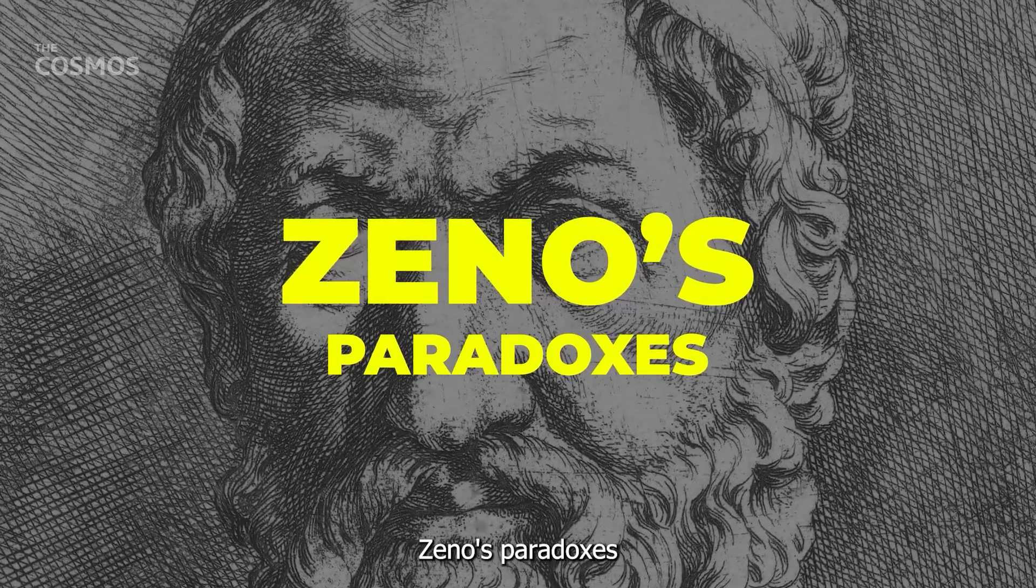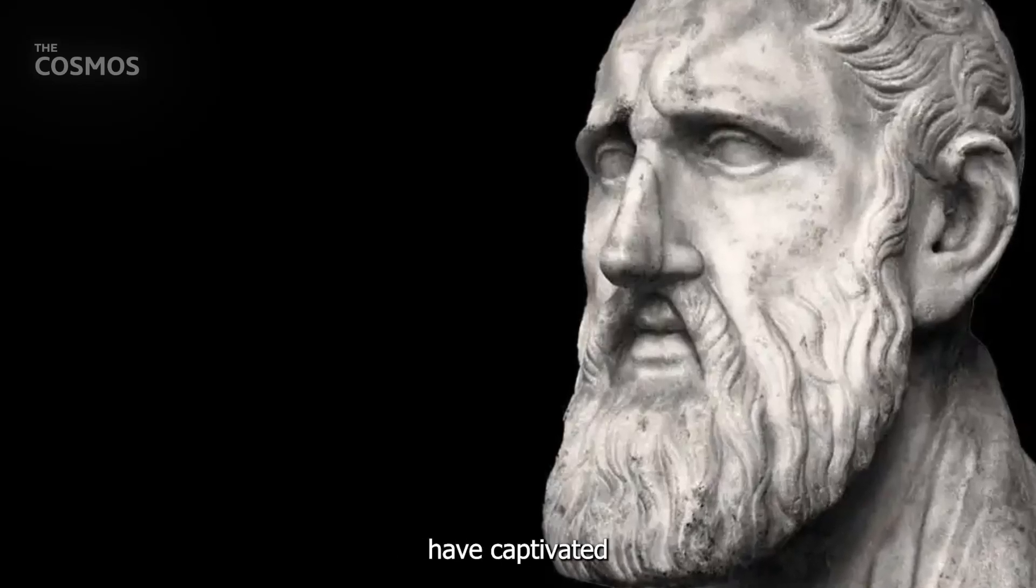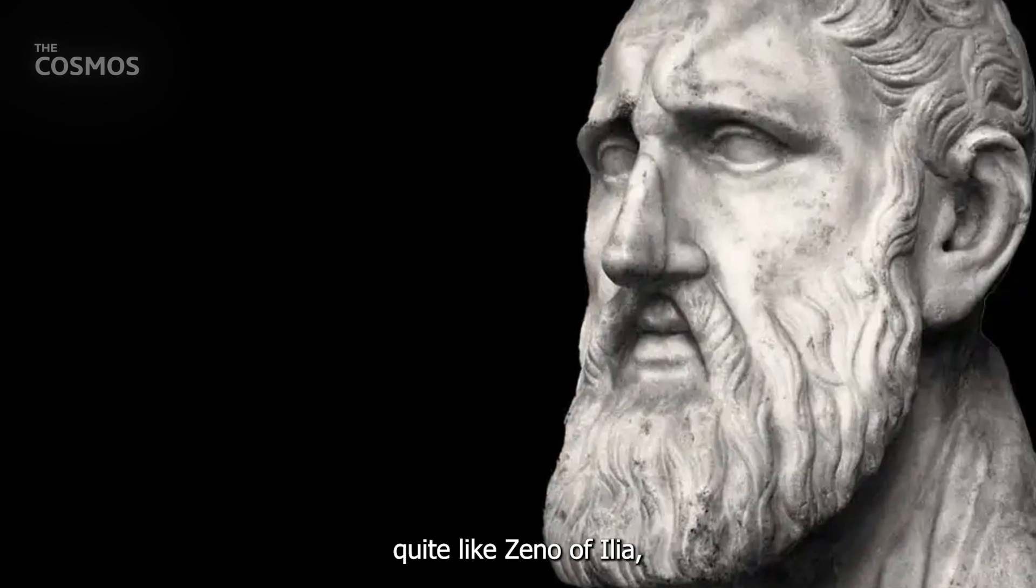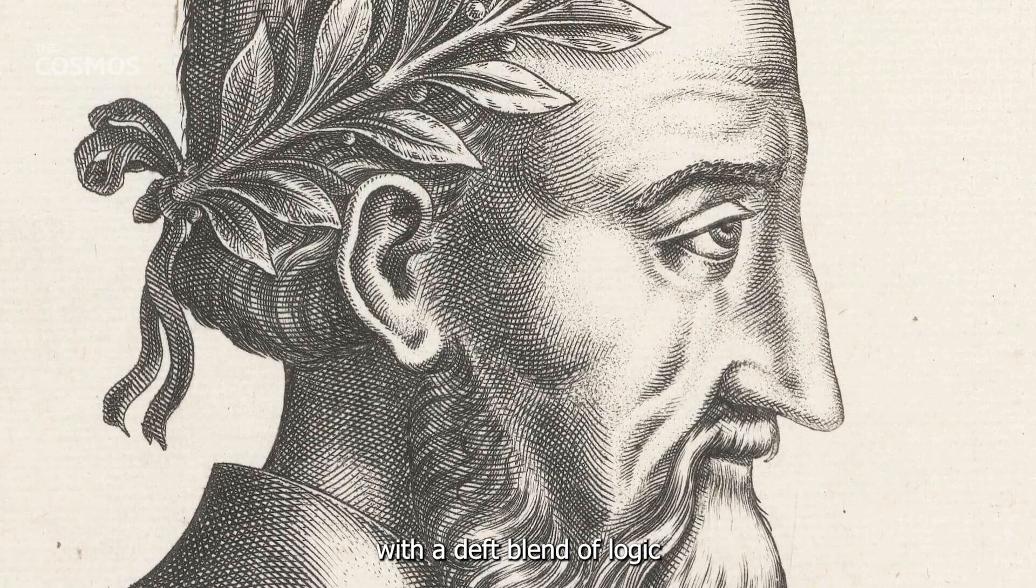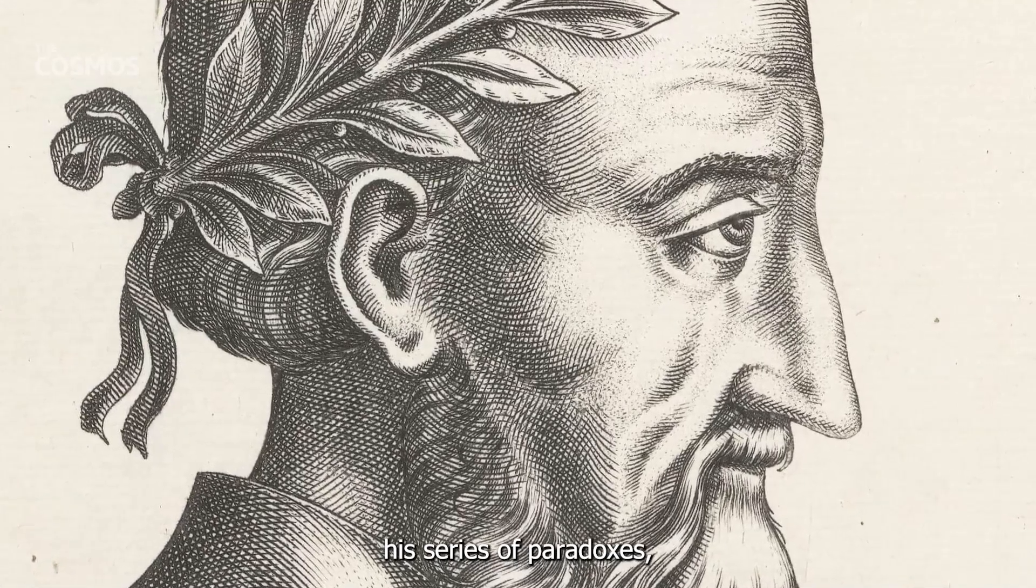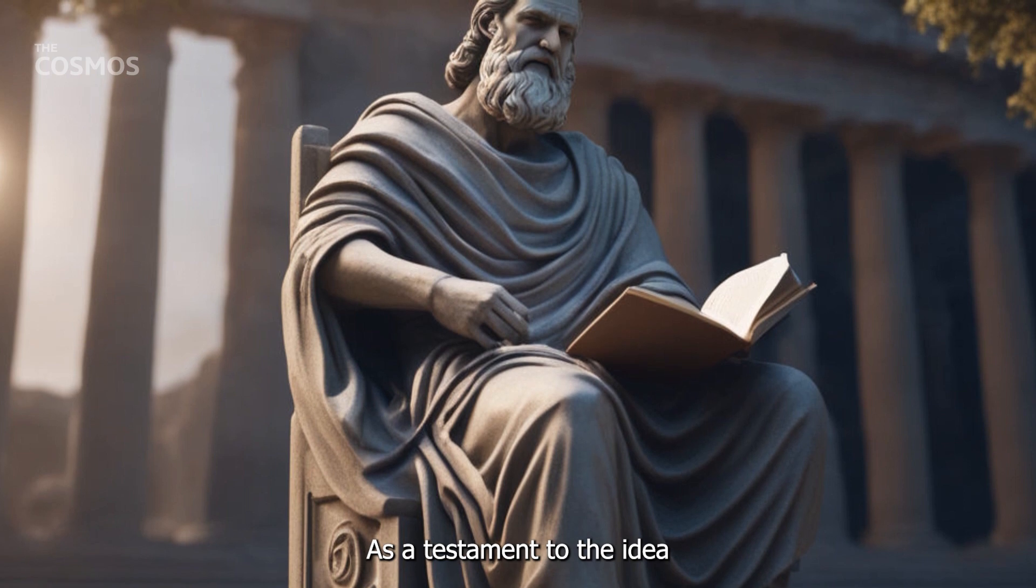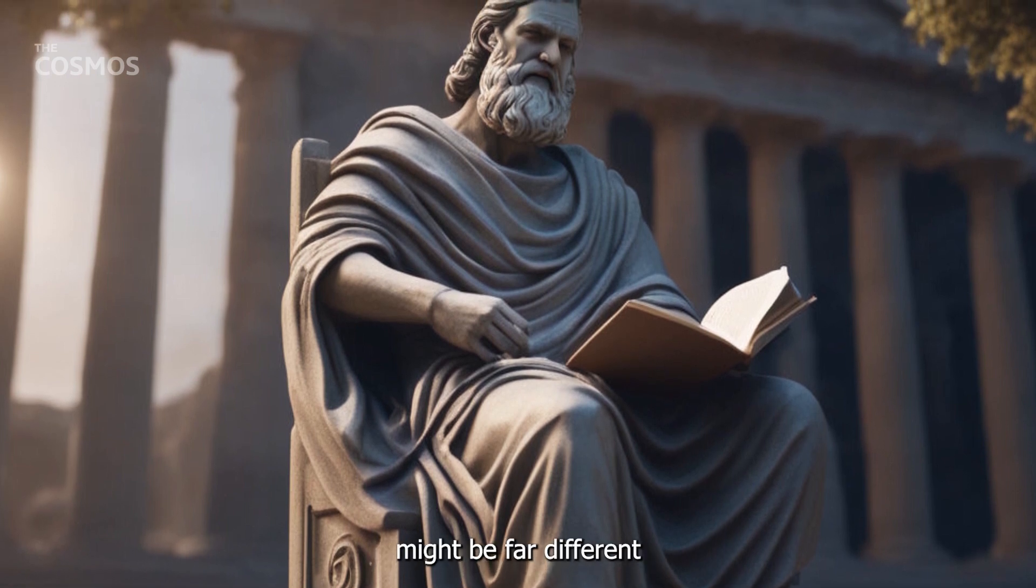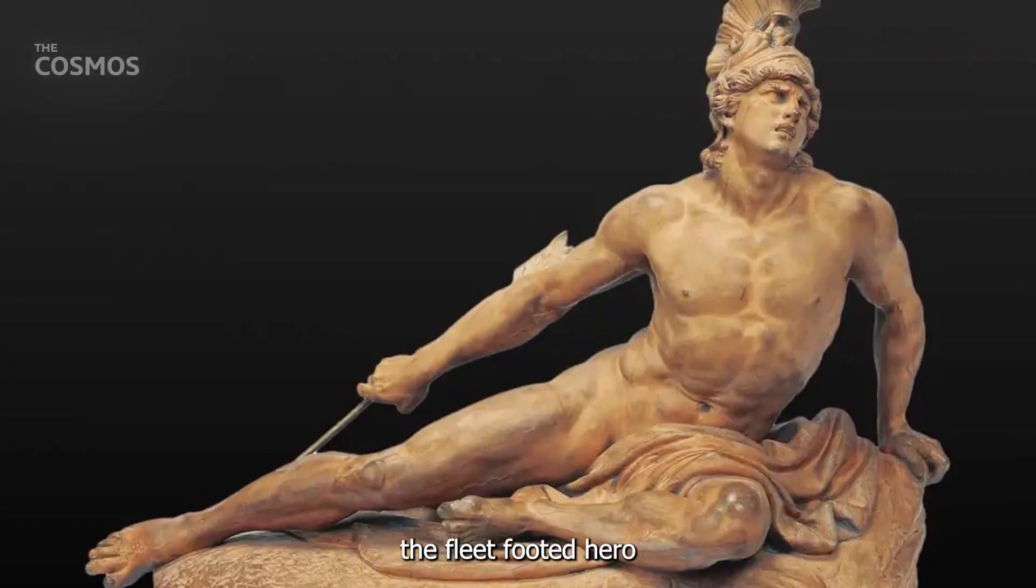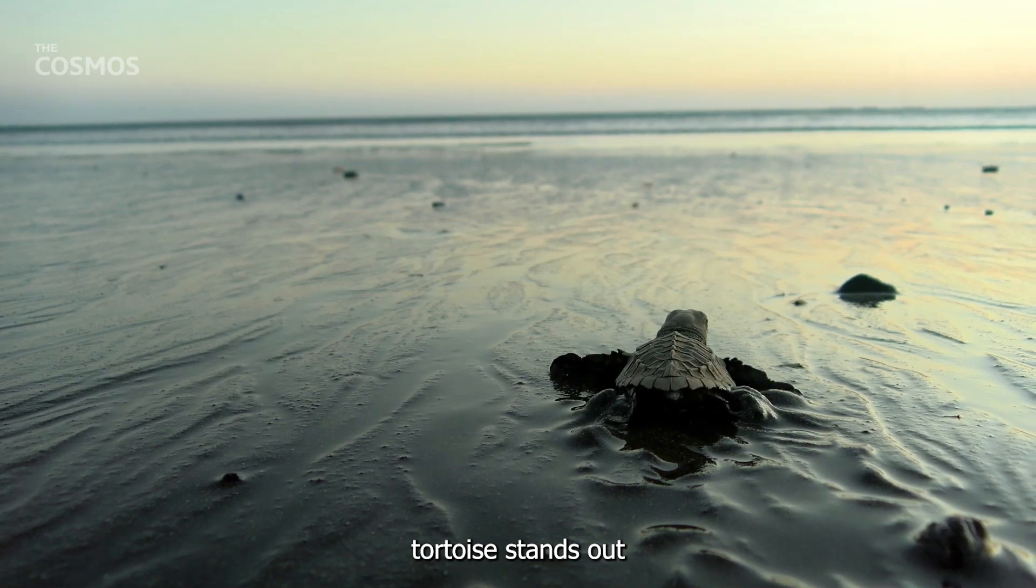Zeno's Paradoxes. In the annals of philosophical thought, few figures have captivated the minds of scholars, thinkers, and the curious, quite like Zeno of Elea. With a deft blend of logic and intuition, Zeno crafted his series of paradoxes, each more perplexing than the last, as a testament to the idea that our perceived reality might be far different from the truths of existence. Among these, the tale of Achilles, the fleet-footed hero, and the seemingly sluggish tortoise stands out.